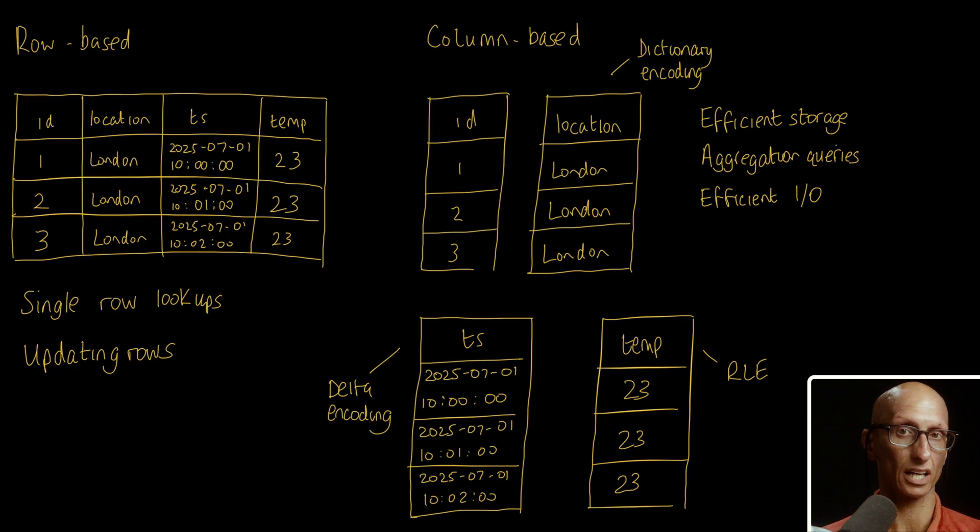The column data layout also aligns well with modern CPU architectures, enabling vectorized processing. This maximizes CPU cache usage and allows for SIMD, so single instruction multiple data operations, dramatically speeding up calculations.